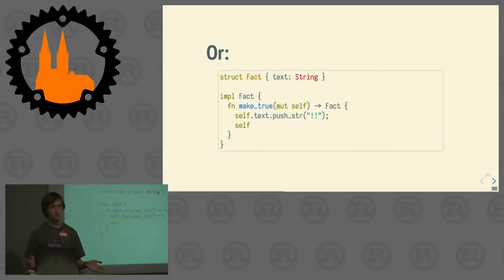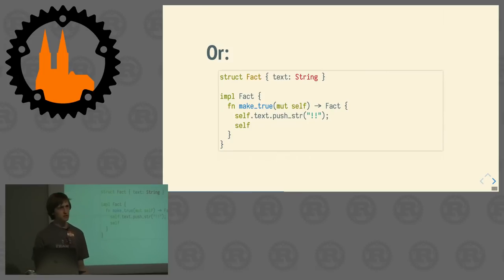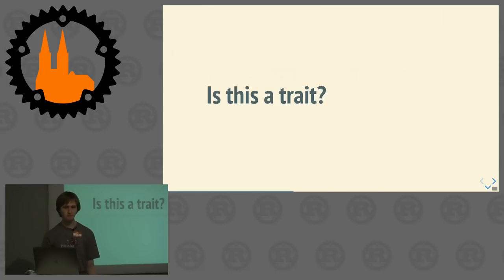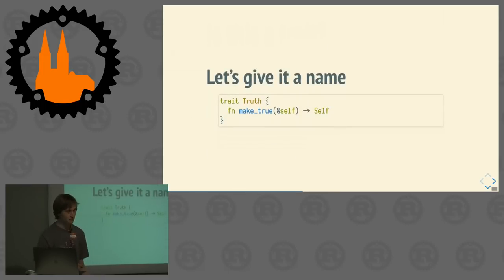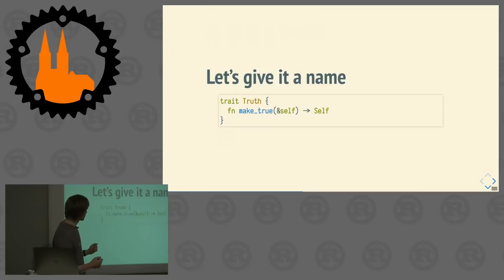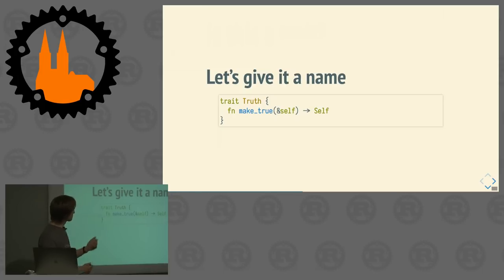Now we've covered data and how we can add behavior to it. I mentioned that this talk was actually about traits — and you may be asking, is this a trait? Yes it is, but it doesn't have a name. We can give it a name. We can call this trait `Trues` and write the method signature. In this case it takes a reference to self and returns `Self`.